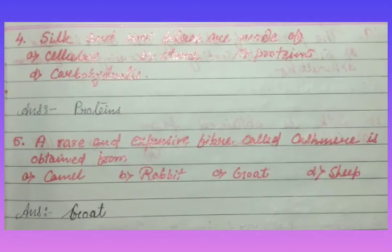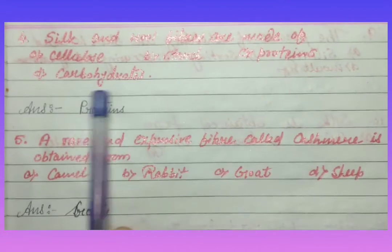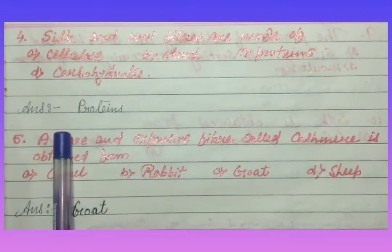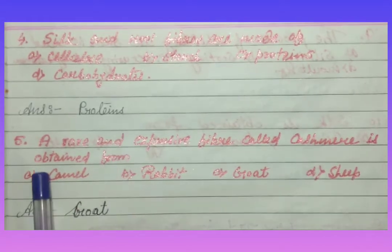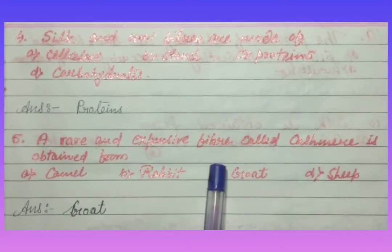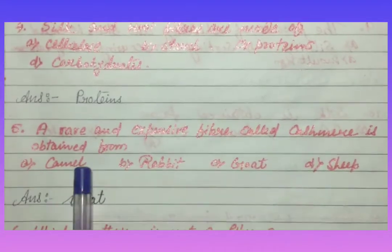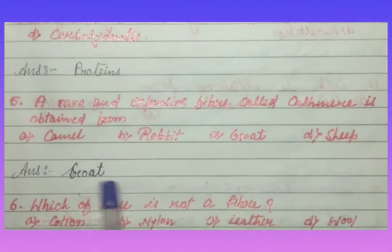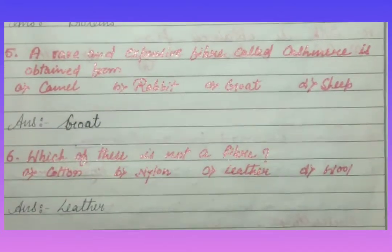Silk and wool fibers are made of cellulose, starch, proteins, or carbohydrates. The answer is proteins. A rare and expensive fiber called cashmere is obtained from camel, rabbit, goat, or sheep. The answer is goat.